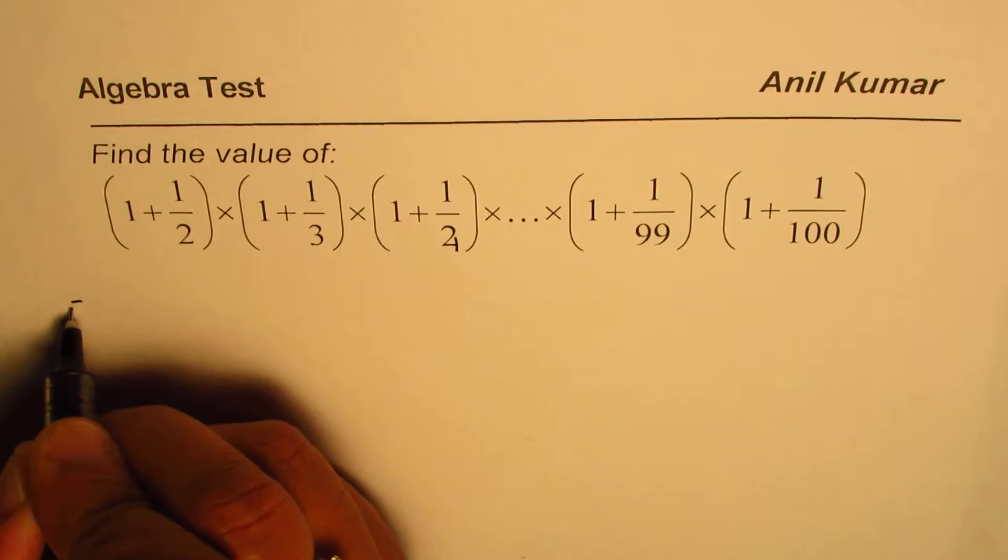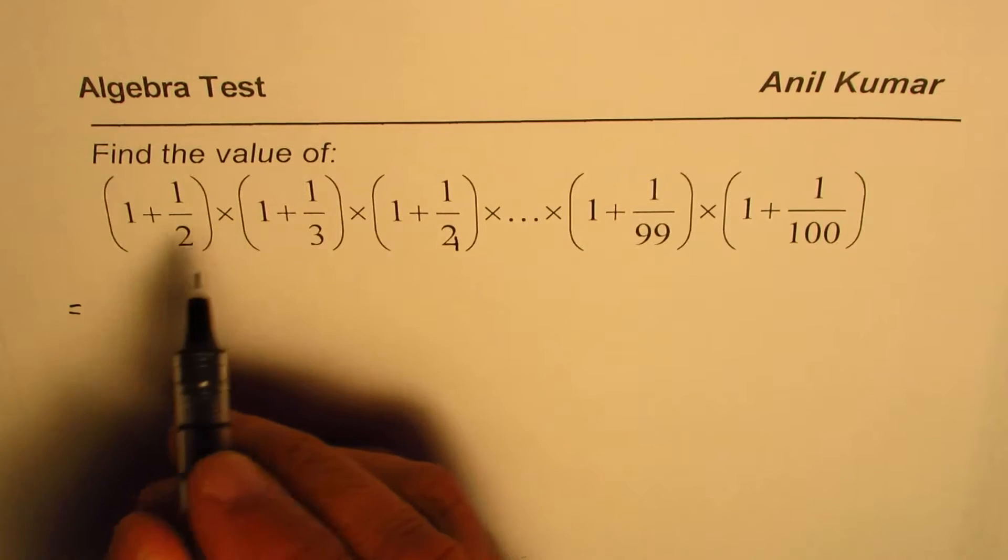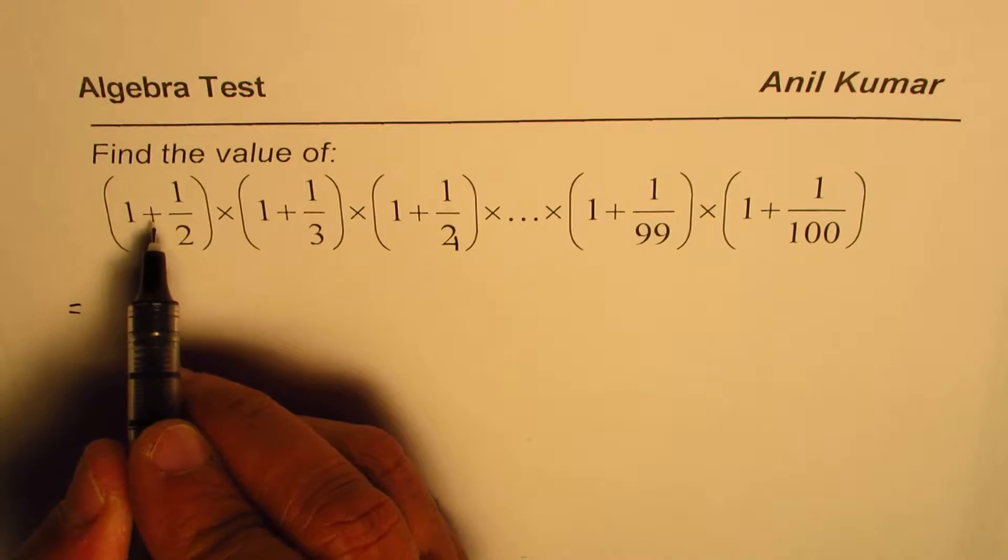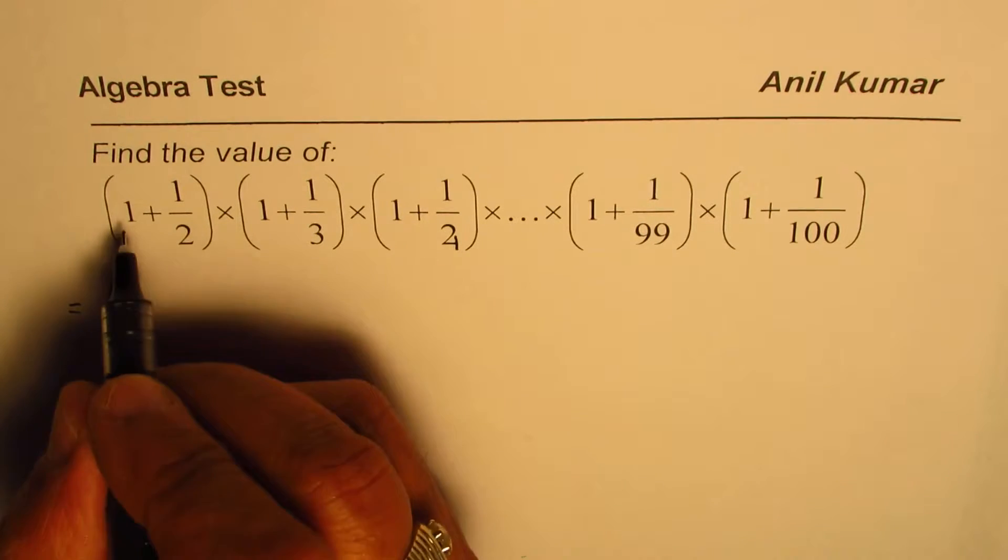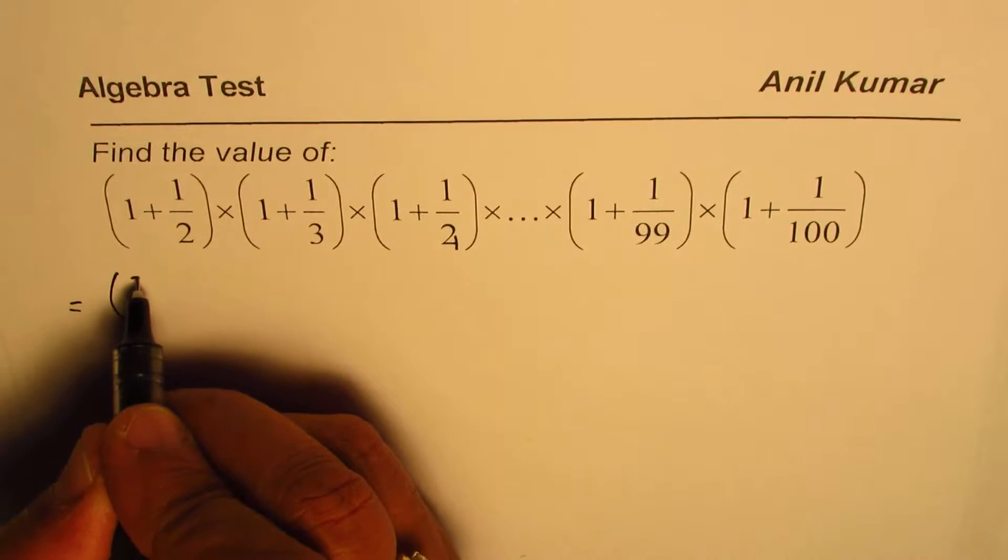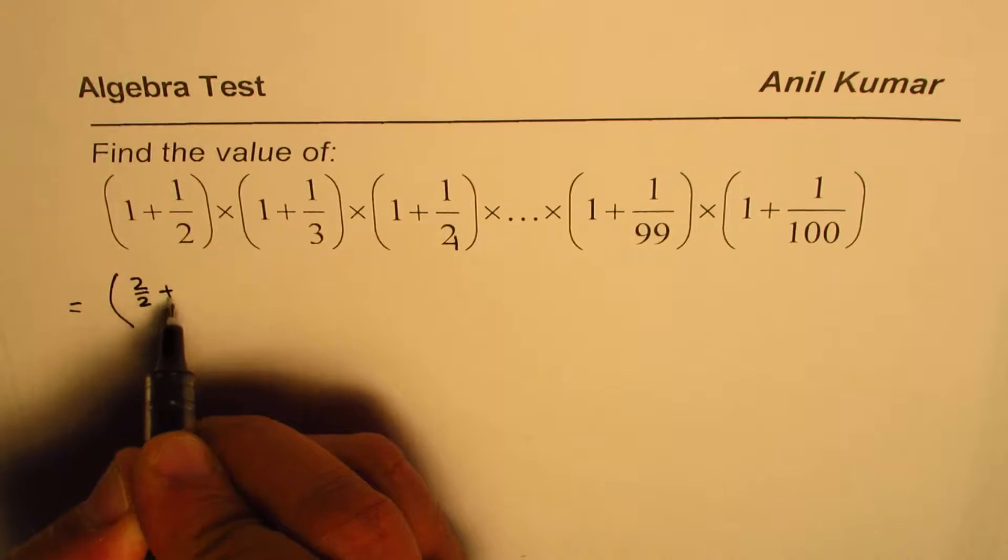Now let's begin by adding each term. So when we have one plus one over two, we should have a common denominator to add. Here, one could be written as two over two, right? So two over two plus one-half.